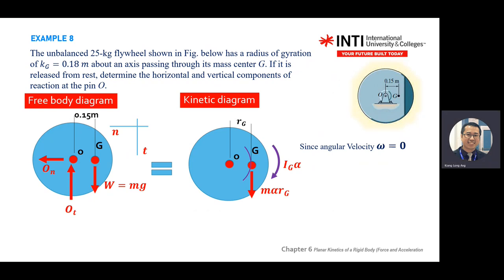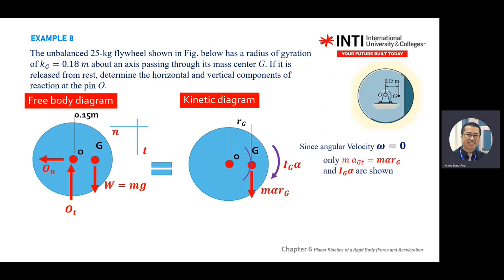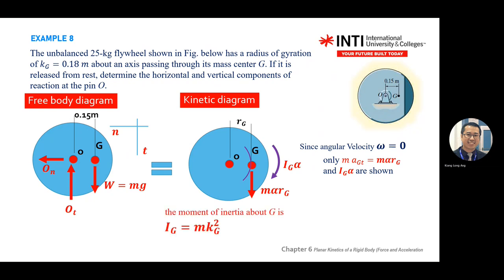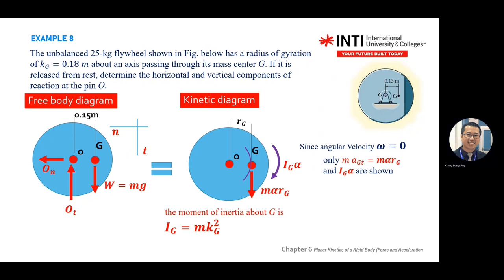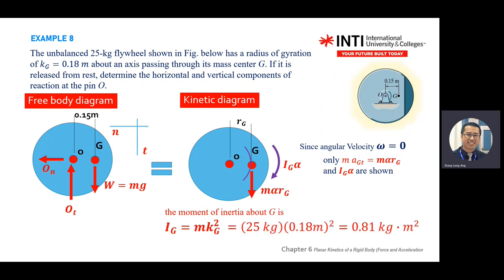Why is angular velocity omega zero? Because we start from rest. Then find the moment of inertia about G — refer to the table, which gives I_G equals M times K squared. M is given and K is given, so you can calculate I_G.